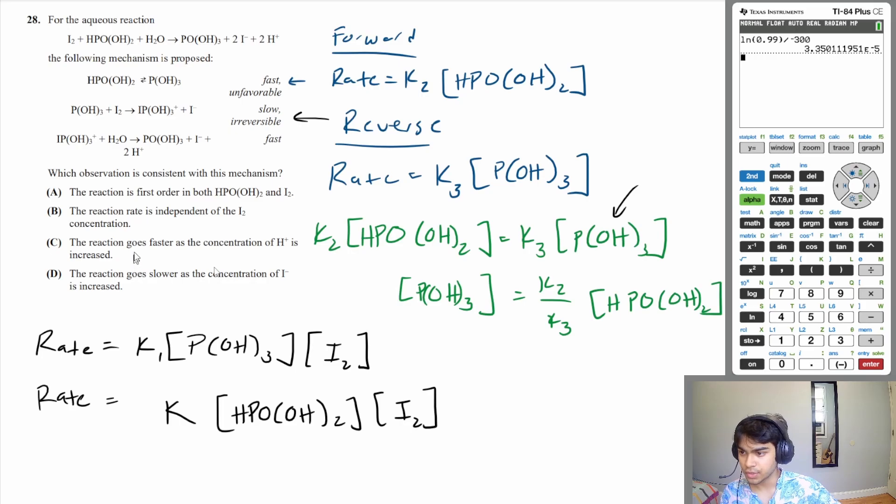And now let's go through our answer choices. A, the reaction is first order with both HPOOH2 and I2. That's true. You can see in the rate law that this is first order and this is also first order. So one checks out. B, the rate law is independent of the I2 concentration. That is not true. I2 is part of your rate law. It has a rate order of one. So B is incorrect. C, the reaction goes faster as the concentration of H plus is increased. H plus is not part of your rate law. So H plus, the concentration of H plus does not affect the rate. D, the reaction goes slower as the concentration of I minus is increased. Similarly, I minus is not part of the rate law. So it doesn't actually affect the rate. Therefore, our answer is A.